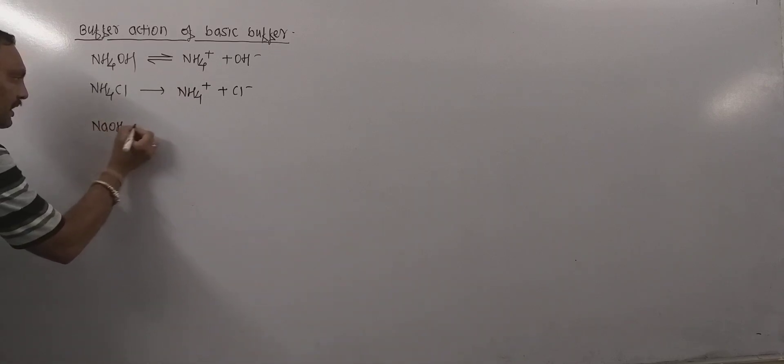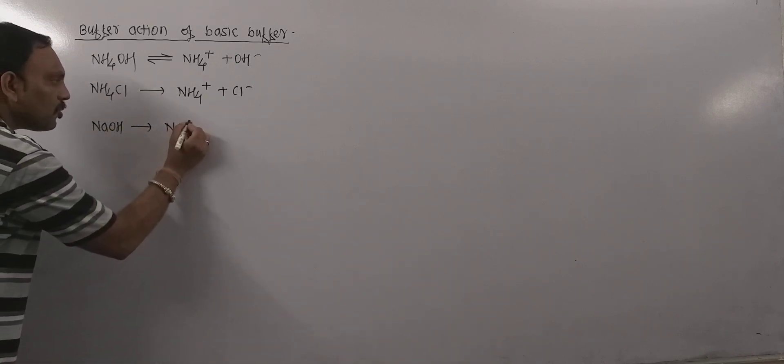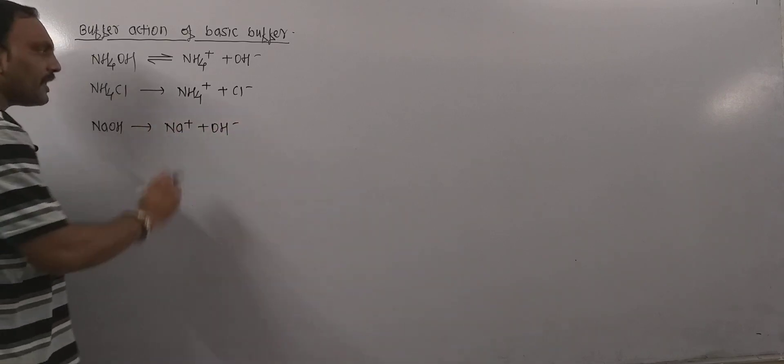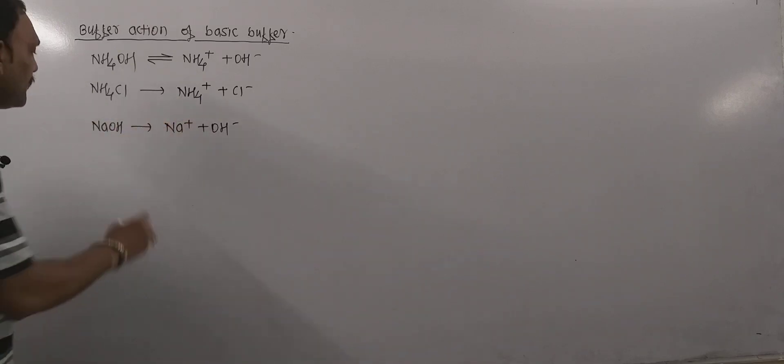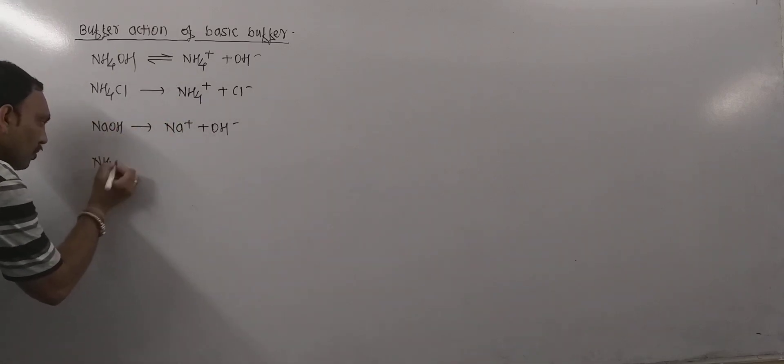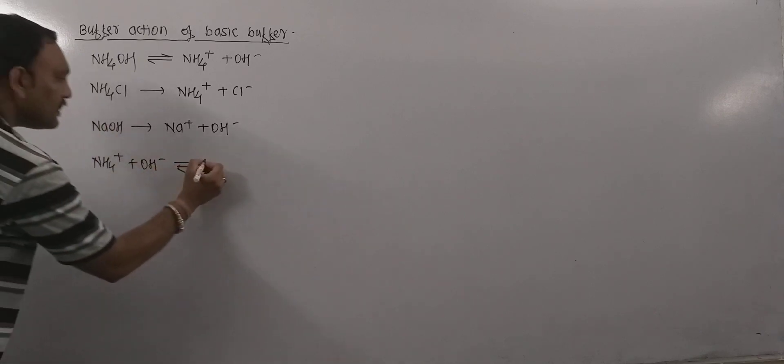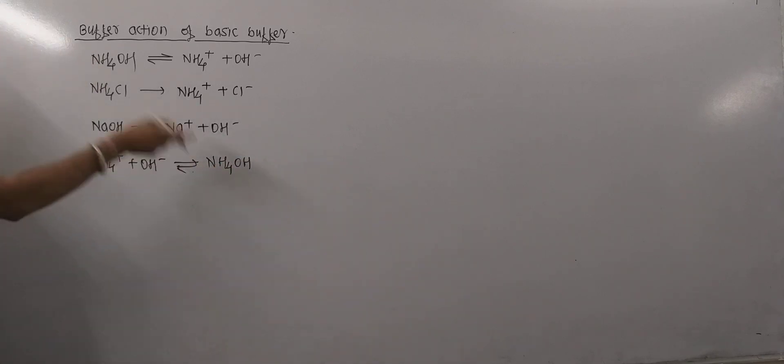If small amount of strong base like NaOH is added to this buffer solution, then NaOH dissociates completely producing OH minus ions. These OH minus ions provided by NaOH are attracted by the NH4 plus ions. NH4 plus ions combine with OH minus ions given by the base and that leads to the formation of NH4OH, which is one of the constituents of the basic buffer.